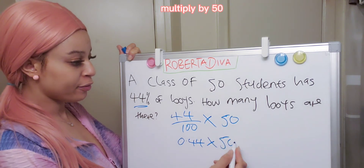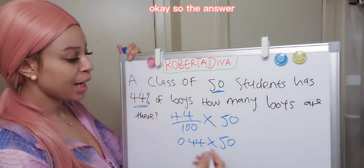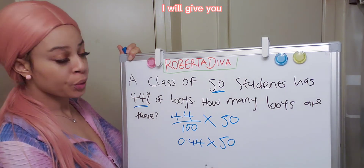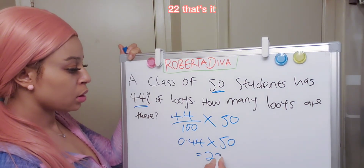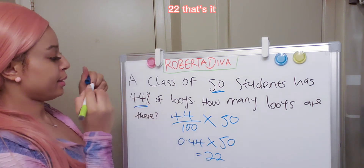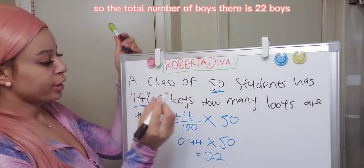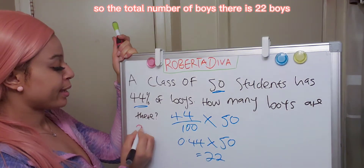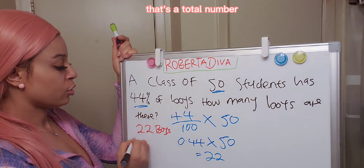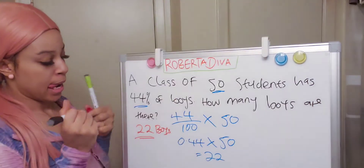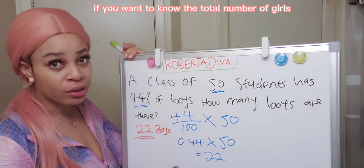Multiply by 50 — that's the total number of students in the class. The answer will give you 22. That's it. Do you guys understand? The total number of boys is 22 boys. So if you want to know the total number of girls as well...